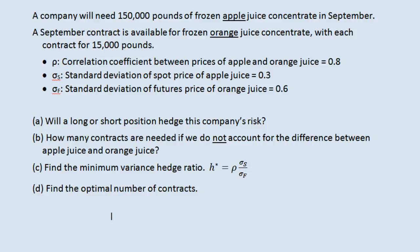Hello everyone. Jeff here with an example of calculating a minimum variance or optimal hedge ratio. This is needed when a company is cross-hedging, which means that it is trying to hedge one product by using a futures contract for a different product. In this particular example, we have a company that will need 150,000 pounds of frozen apple juice concentrate in September. There is a September contract available, but it is for frozen orange juice concentrate, and each contract is for 15,000 pounds.